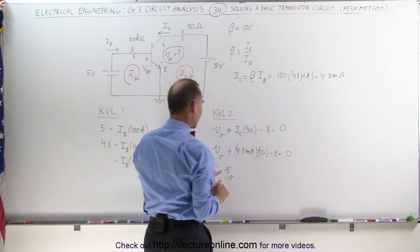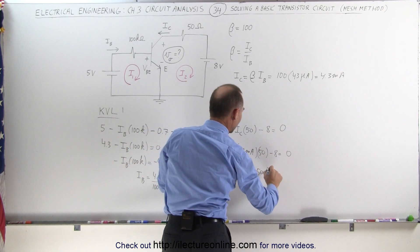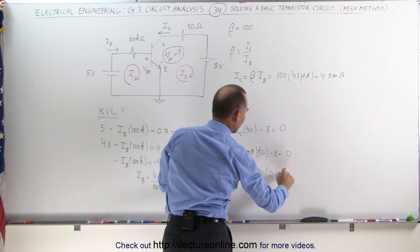we can say that the voltage between the collector and the emitter is equal to 8 minus 50 times 0.0043.